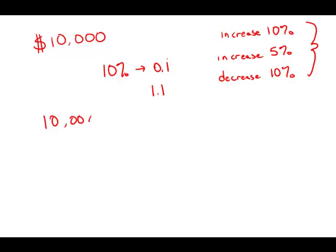And 10,000 times this multiplier, 1.1, is 11,000. That's how much she had after the first year.